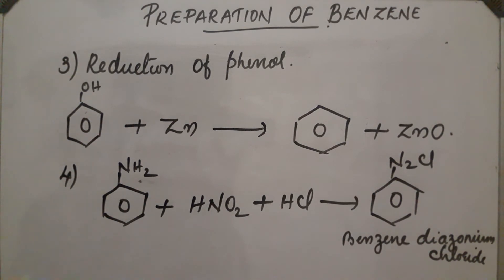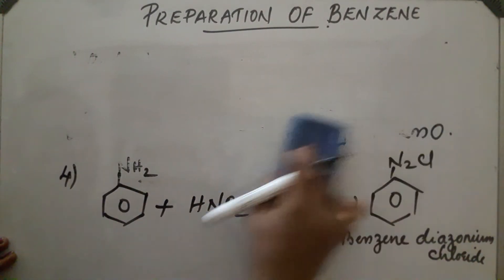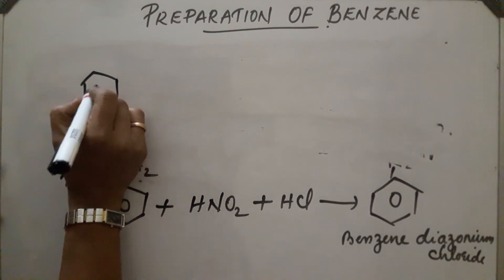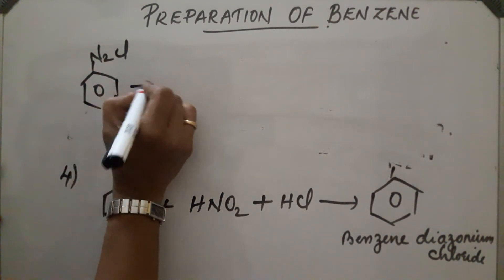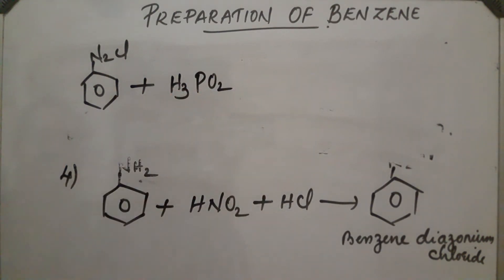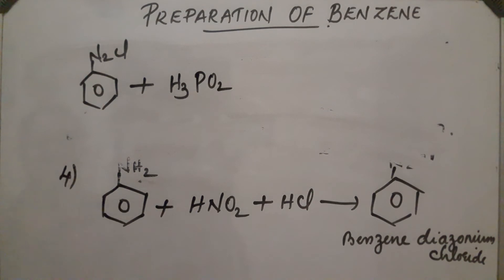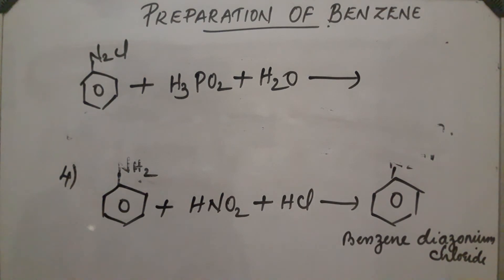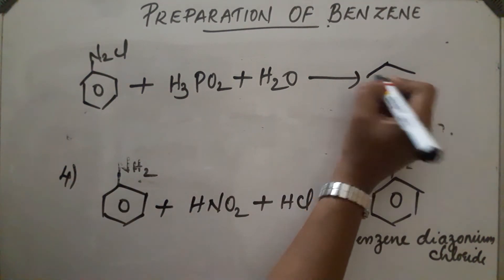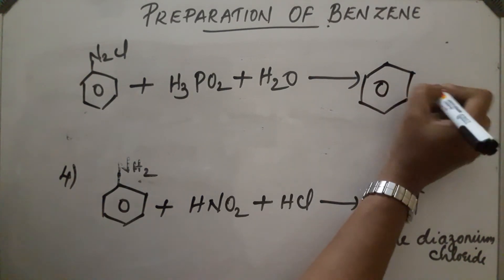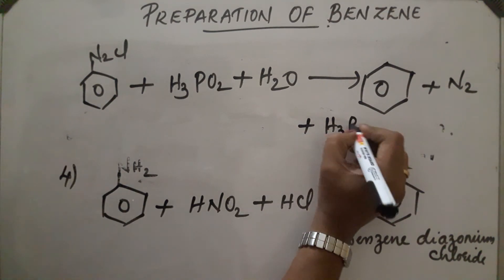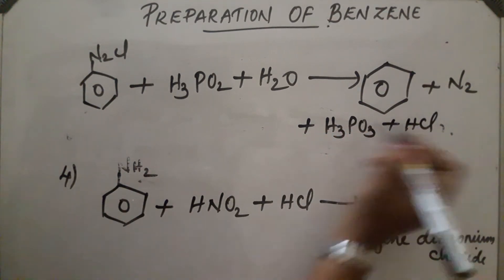Benzene diazonium chloride on reaction with hypophosphorous acid (H3PO2) and H2O at room temperature gets converted into benzene. The byproducts are H3PO3 and HCl. This is the fourth method of preparation.